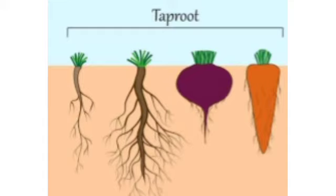Most trees have tap roots. Some examples are carrots, beans, turnips and mustard. They have one thick main root — that is called a tap root.